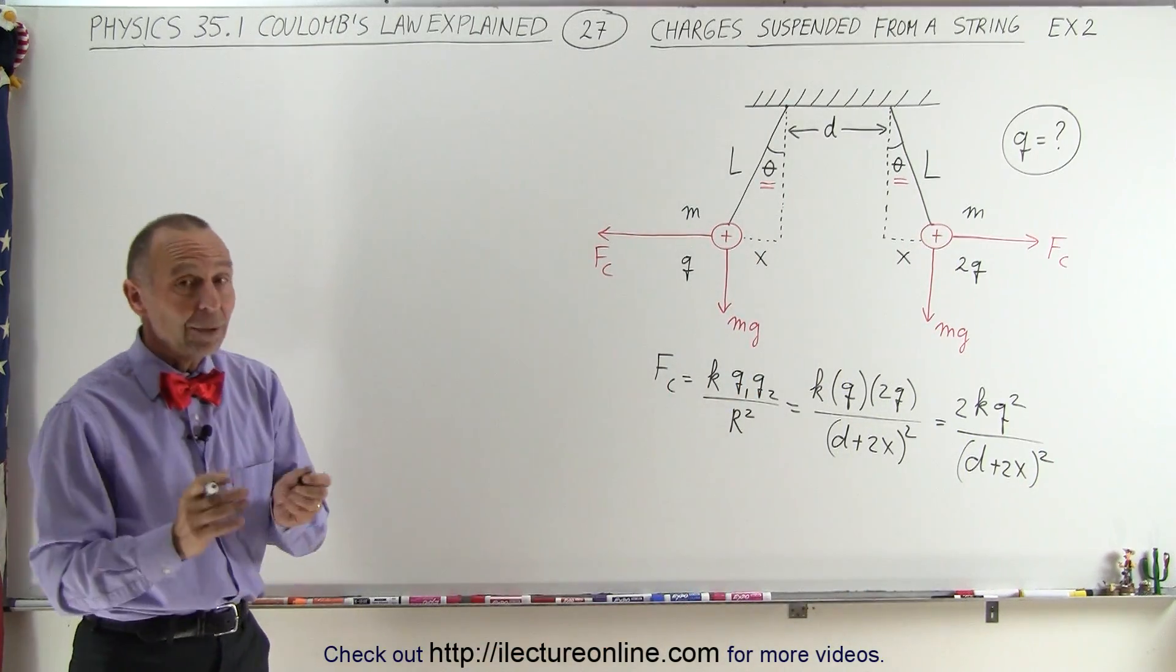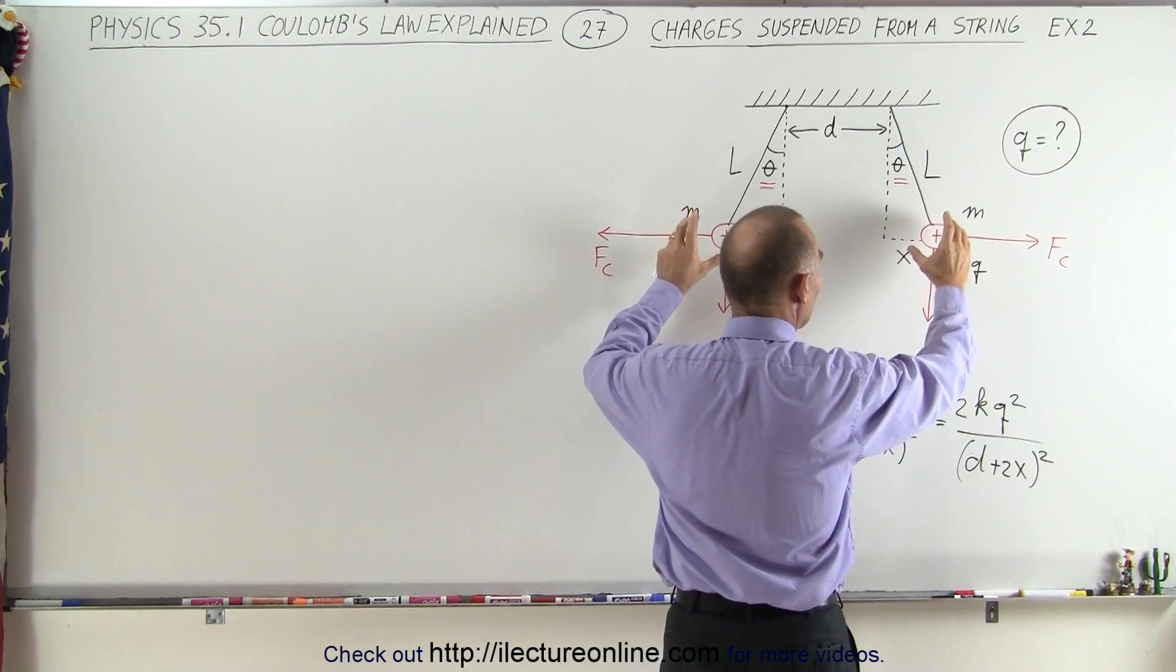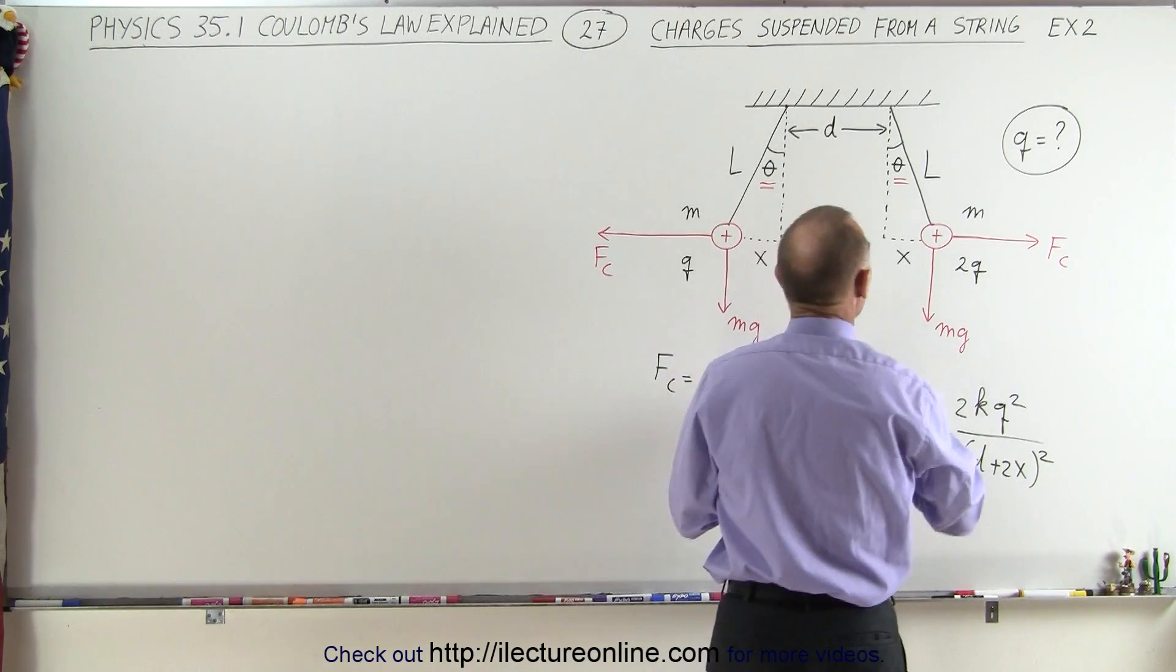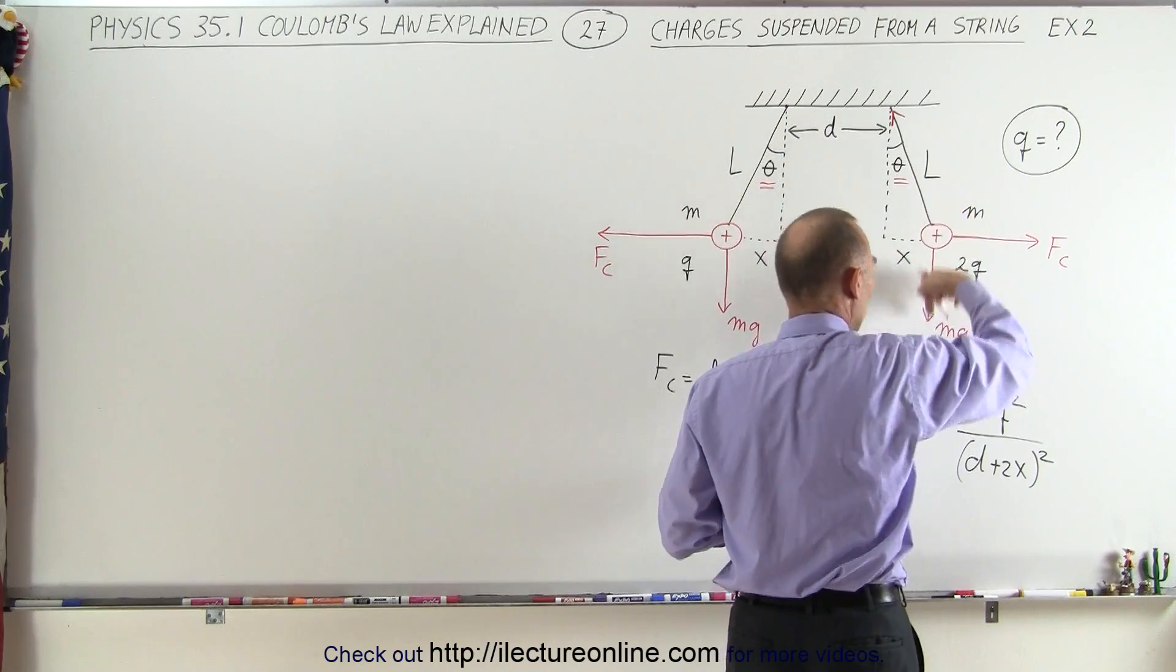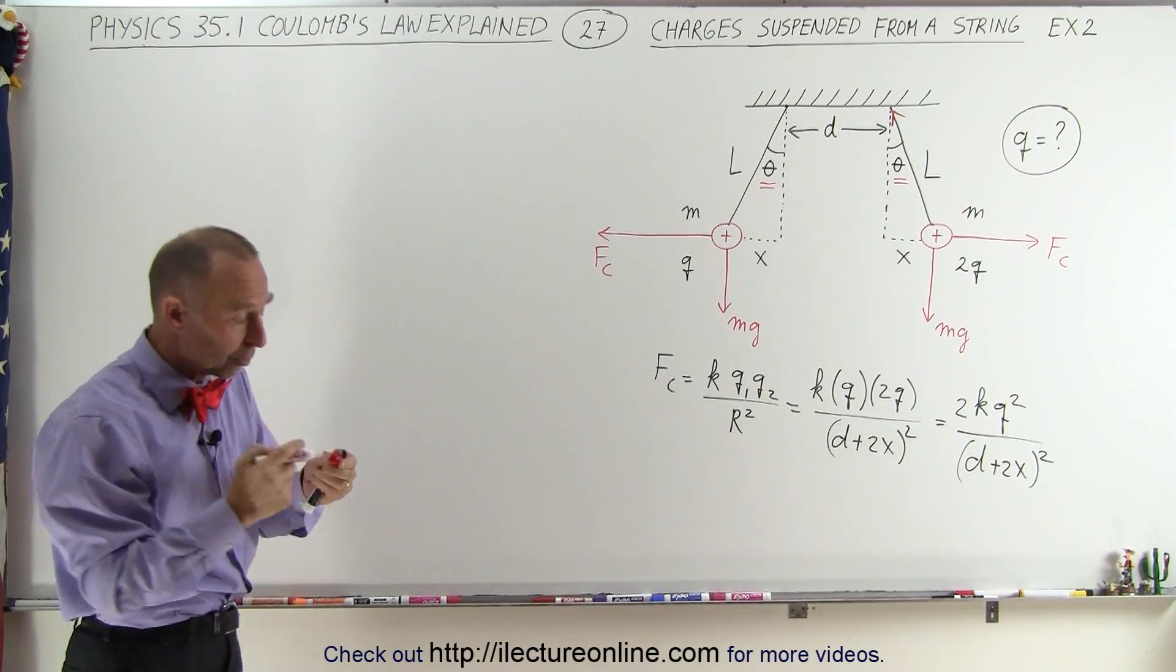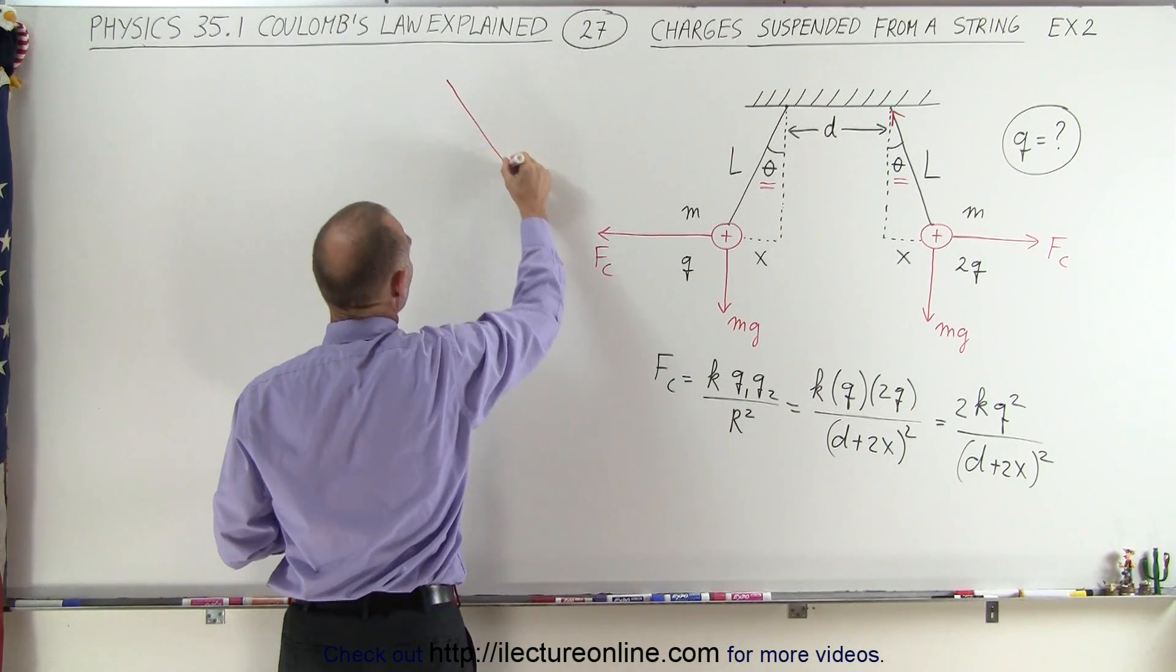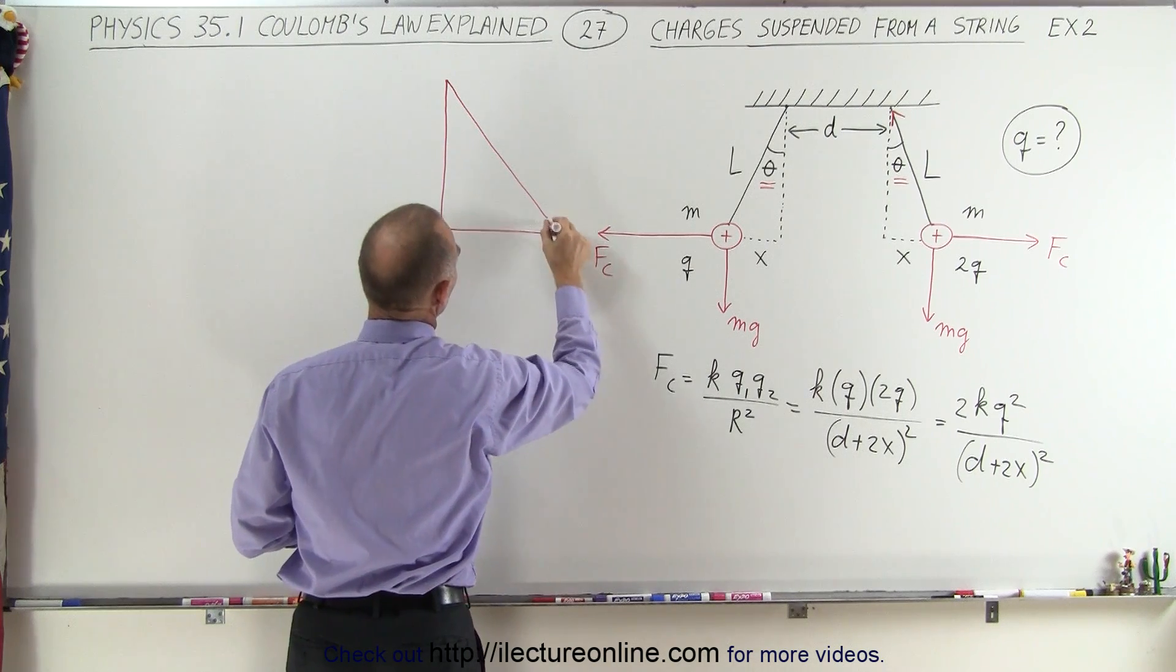Alright, now again we're able to realize that this will be in a static situation, this will not be moving, which means that we have a tension on the string pulling in this direction, we have the Coulomb force pushing in this direction, and we have the weight pulling in this direction, which means we can now relate those three to one another as follows. We have this force right here, we have this force down this way, and one going this way.